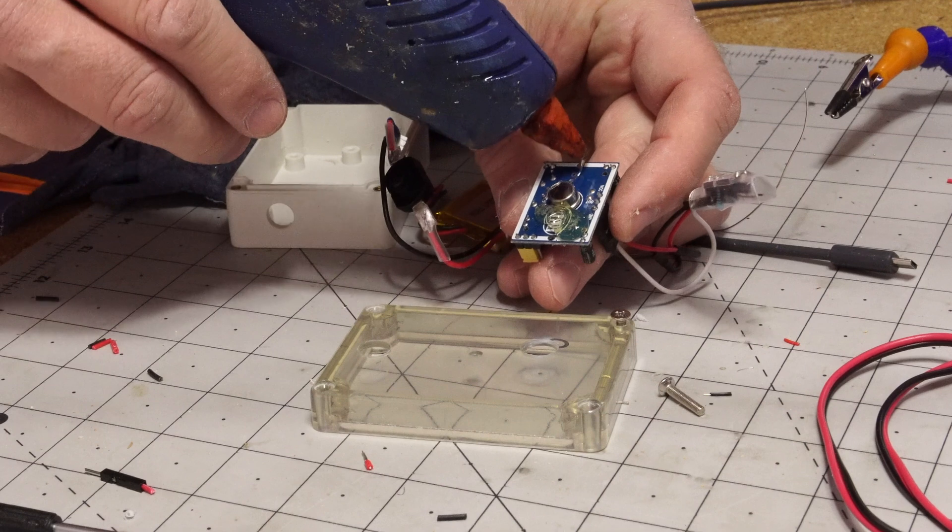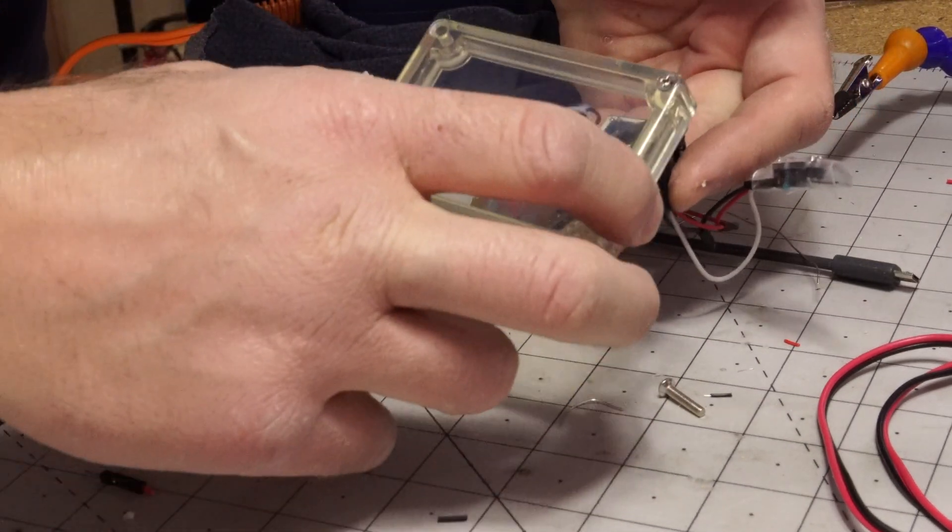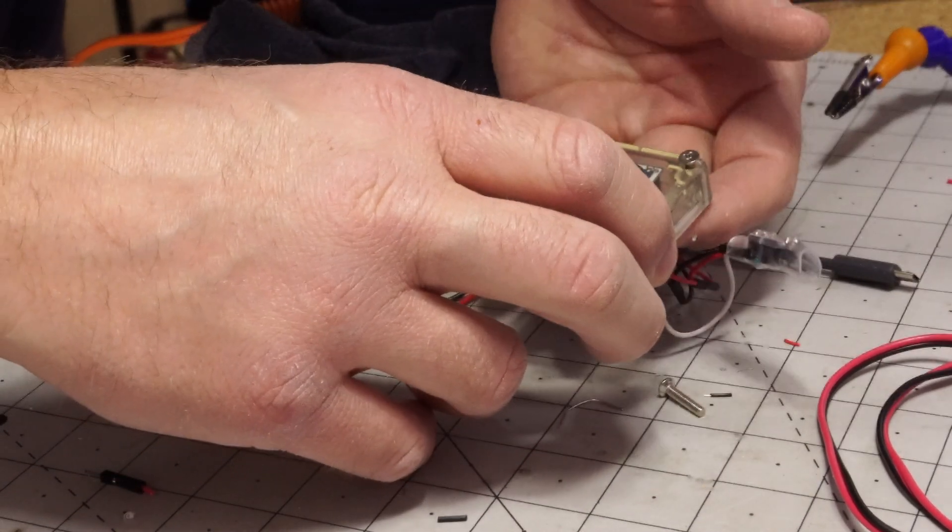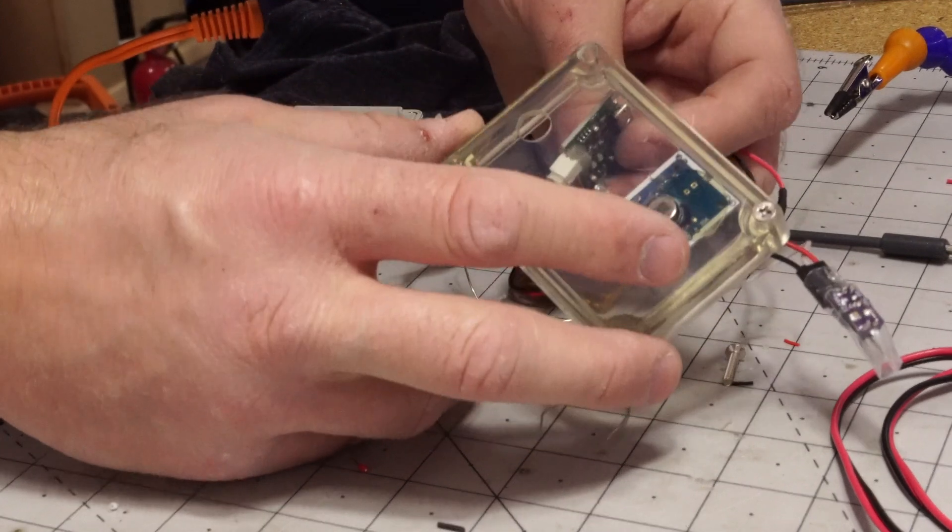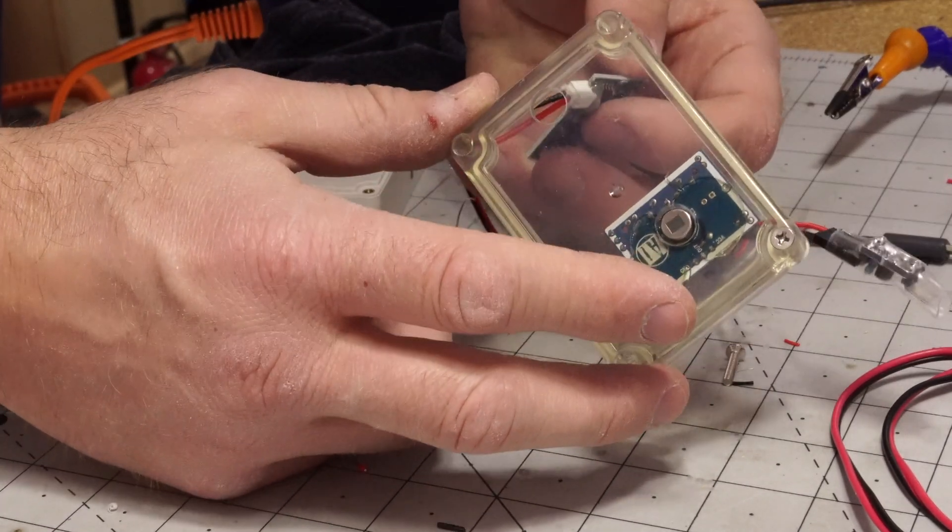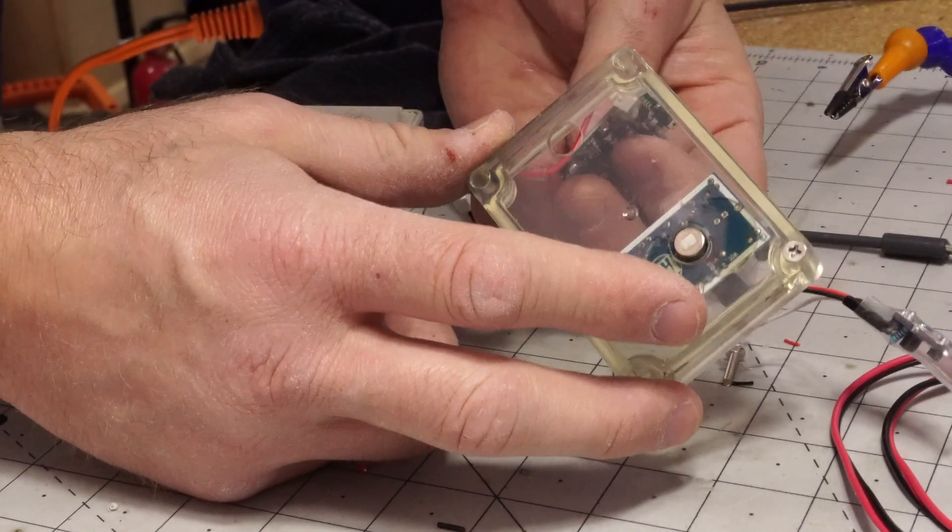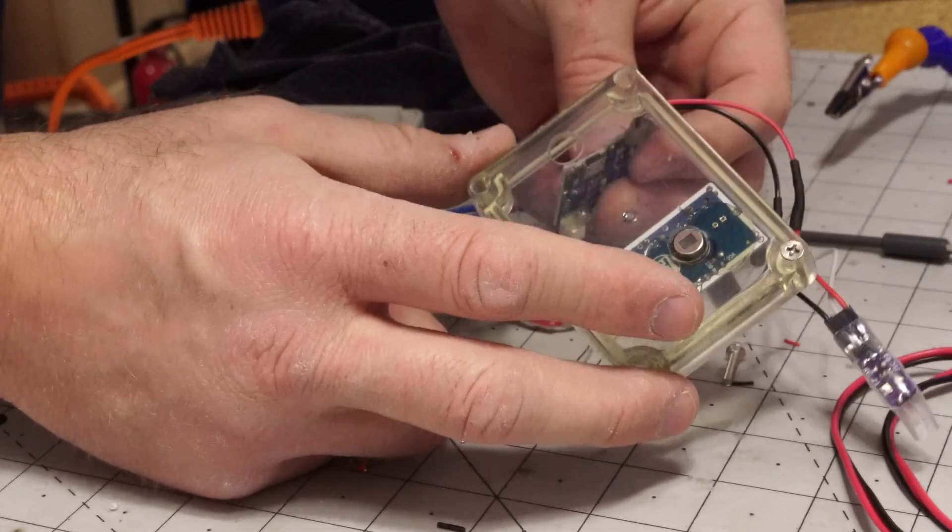A little hot glue on the PIR sensor. Plug that in. Held nicely. Not worrying about the shield there because it's not like it's got to see a wide swath. It just needs to see the hands in front of it to turn on.